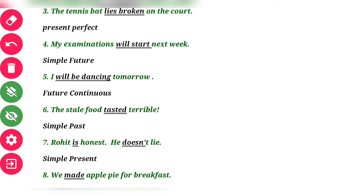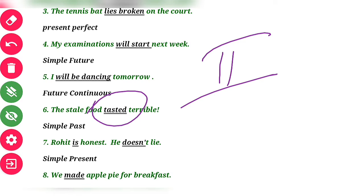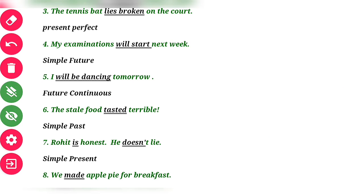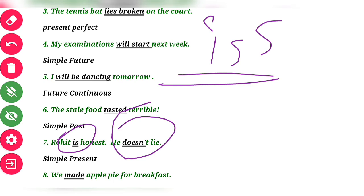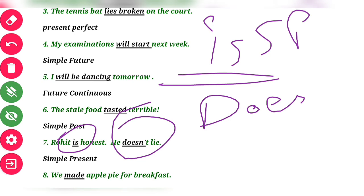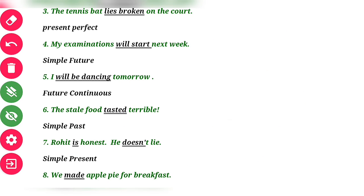Question 6: 'The stale food tasted terrible.' 'Tasted' is the second form of the verb (V2), so it is again Simple Past. Next, question 7: 'Rohit is honest, he doesn't lie.' 'Is' and 'doesn't' — 'is' indicates Simple Present, and 'doesn't' is the negative form of Simple Present. So Simple Present Tense is used here.